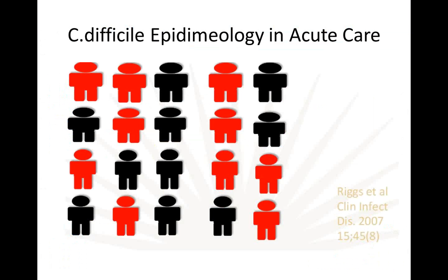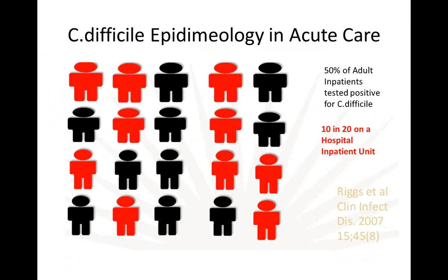From an epidemiology perspective, a 2007 study found that up to 50% of adults in an inpatient setting can test positive for C. difficile. So in a typical inpatient unit with about 20 people, approximately 10 can actually have and test positive for C. difficile.